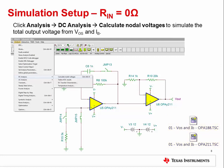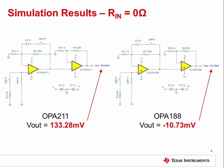Simply double-click the icons to open them. Ensure that the jumpers are set correctly. In the OPA211 circuit, JMP13 and JMP14 are open and JMP15 is closed. In the OPA188 circuit, JMP9 and JMP10 are open and JMP11 is closed. To simulate the output voltage, click Analysis, DC Analysis, Calculate Nodal Voltages. For the OPA211, you should get a result of about 133.28 millivolts. For the OPA188, you should get a result of about minus 10.73 millivolts.